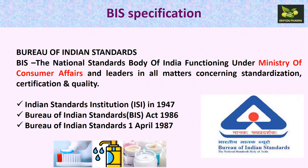First of all, we will understand what BIS is — its full form and its background. BIS is Bureau of Indian Standards. It is the National Standards Body of India and it functions under the Ministry of Consumer Affairs. It is concerned with standardization, certification and quality. This is also called in Hindi as Bharatiya Manak Bureau. In 1947 there was the Indian Standards Institution (ISI) which was constituted. Then later on in 1986, the Bureau of Indian Standards Act came, and on 1st April 1987, the Bureau of Indian Standards was implemented.